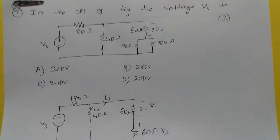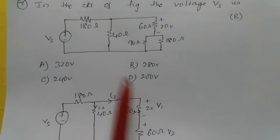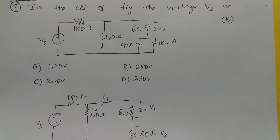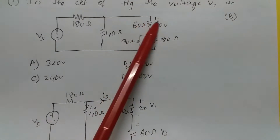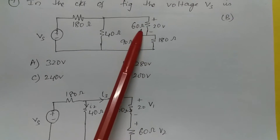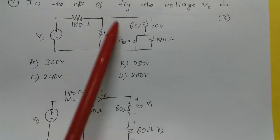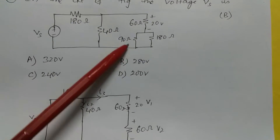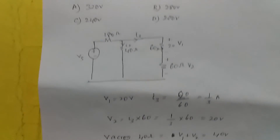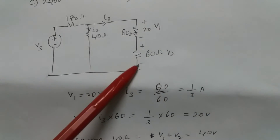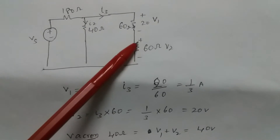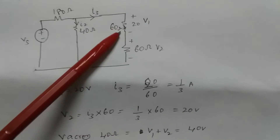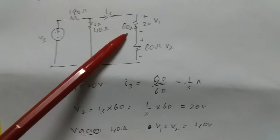In the circuit of the figure, the voltage Vs is to be found. First, solve the parallel network to get an equivalent of 60 ohms. The current through this section is 20/60 = 1/3 amp, so V2 = (1/3)·60 = 20 volts. The circuit is redrawn with the parallel network replaced by 60 ohms; let the voltages be V1 and V2, and current I3 = 1/3 amp.